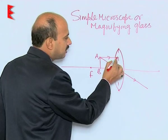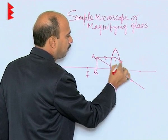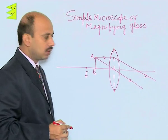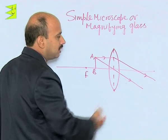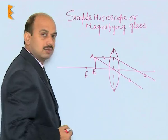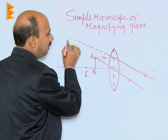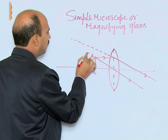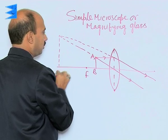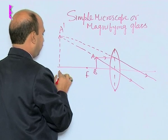After refraction, the ray will pass through the focus, like this. After refraction, these rays appear to diverge. When we extend these rays on this side, we will get the image of the object over here, that is A-dash and B-dash.